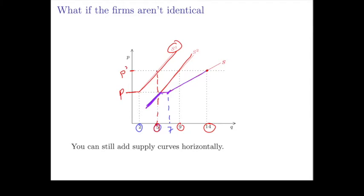So just adding up the supply curves horizontally gives us the market supply curve.